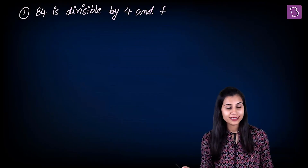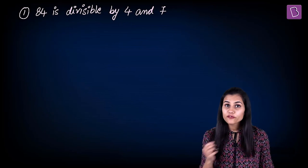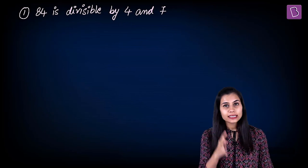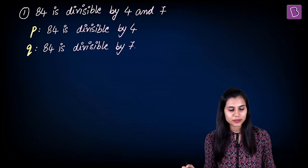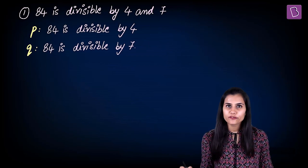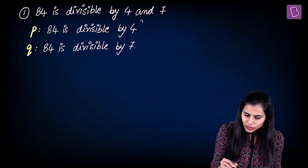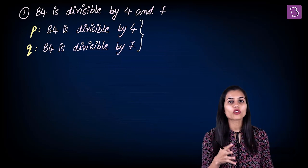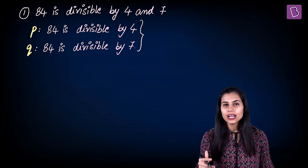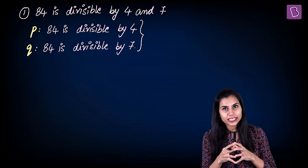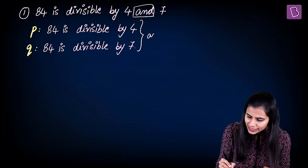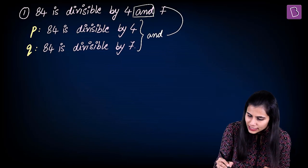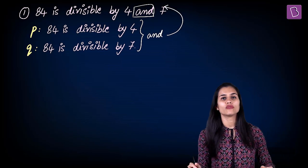Consider this example: 84 is divisible by 4 and 7. We can clearly make out this is a compound statement formed by two simple statements — '84 is divisible by 4' and '84 is divisible by 7.' Both these component statements P and Q are combining together, joining together, connecting together with the help of the word AND, giving rise to this original compound statement.